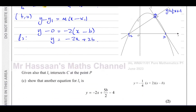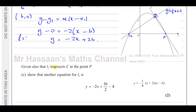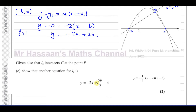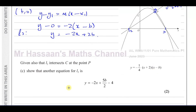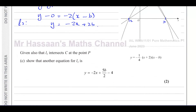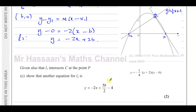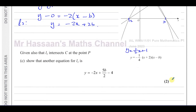Part C says: given also that line L2 intersects C at point P, show that another equation for line L2 is y = −2x + 5b/2 − 4. To do this, we need to find the coordinates of P by solving the equation of curve C simultaneously with line L1: −¼(x + 2)(x − b) = ½x + 1.